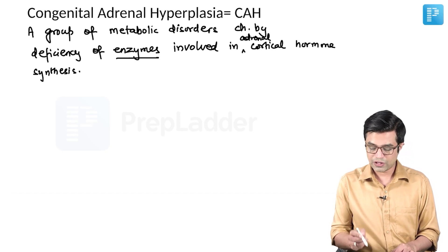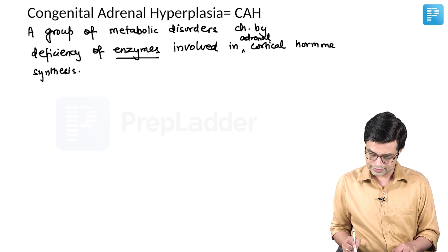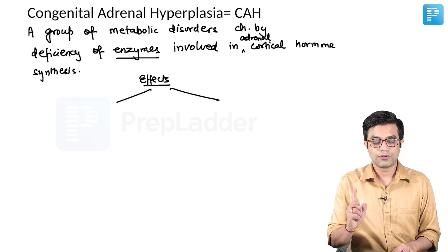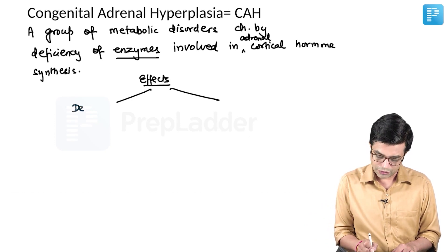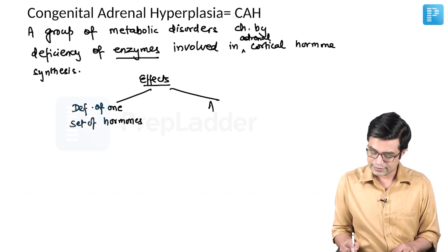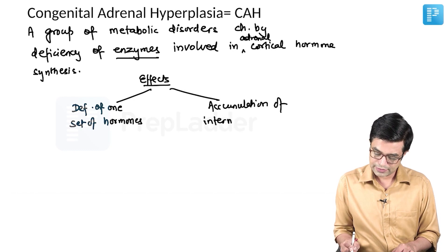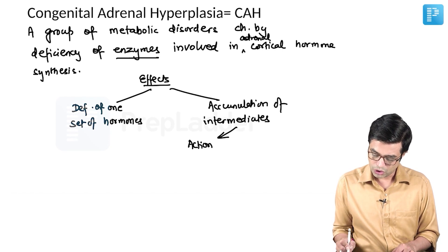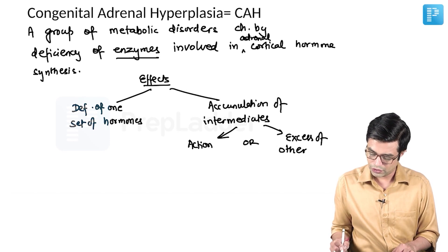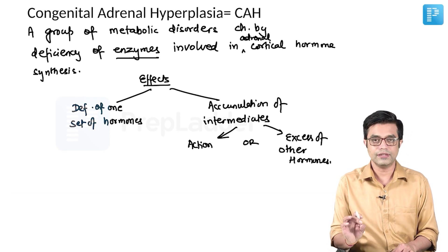There is a deficiency of one or more enzymes in adrenocortical hormone synthesis. The effects are produced because of two reasons: first, there is a deficiency of one set of hormones, and second, there is accumulation of intermediates which themselves have their own action, or they can cause excess of other adrenocortical hormones.